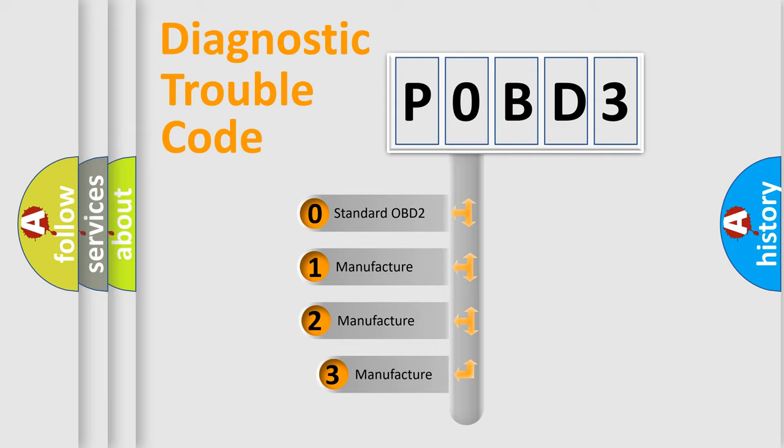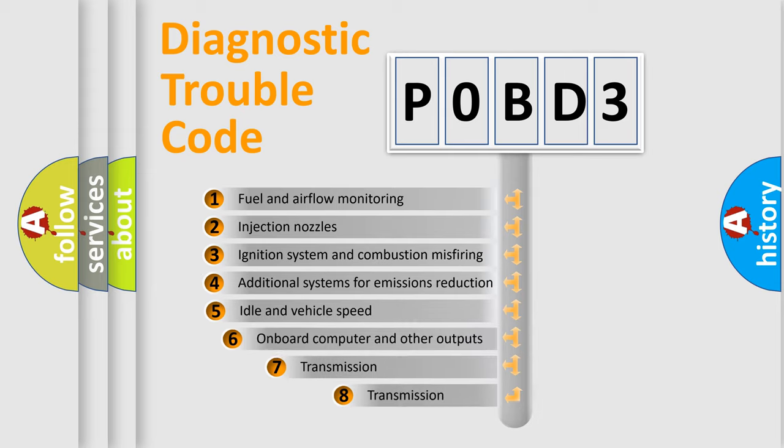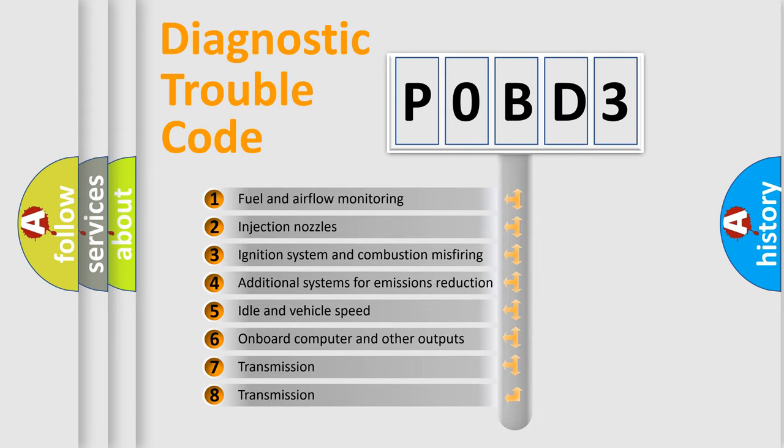If the second character is expressed as zero, it is a standardized error. In the case of numbers 1, 2, or 3, it is a manufacturer-specific error. The third character specifies a subset of errors.